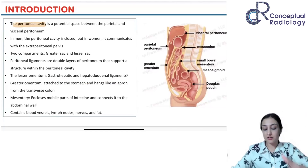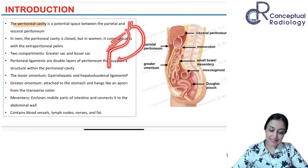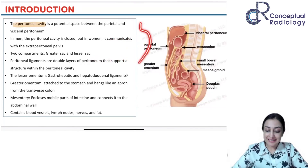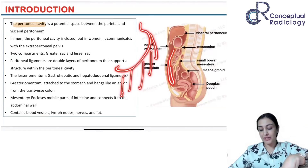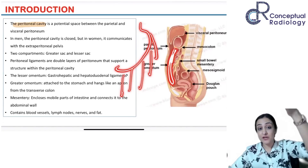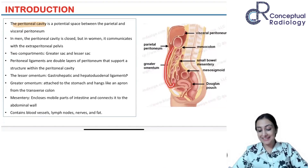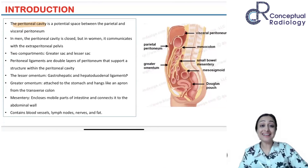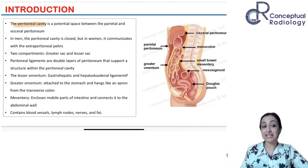The greater omentum arises from the greater curvature and is like a curtain — you can see how it goes down anteriorly. It's actually four layers: two anterior and two posterior, folding upon itself. On ultrasound it looks very nice when it's thickened and caked, and you're going to see it very anteriorly. That is your greater omentum, sitting anterior to the small bowel.